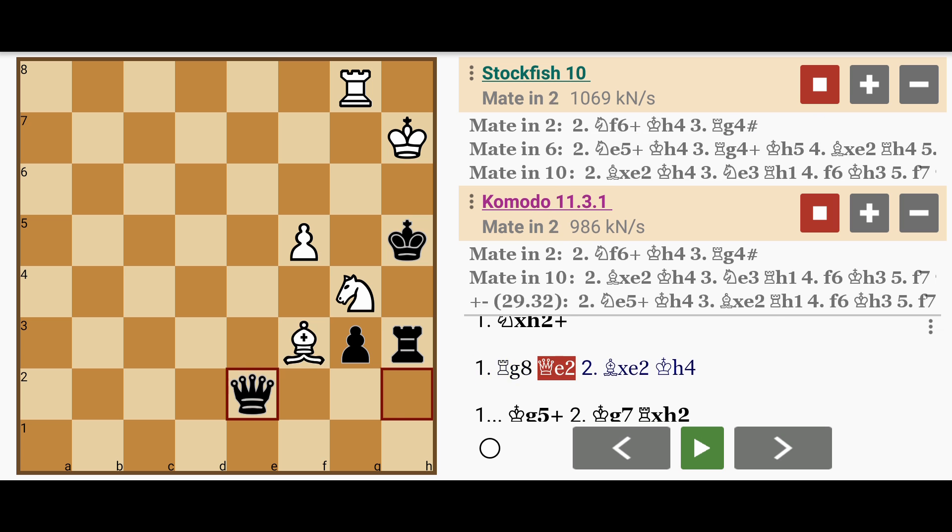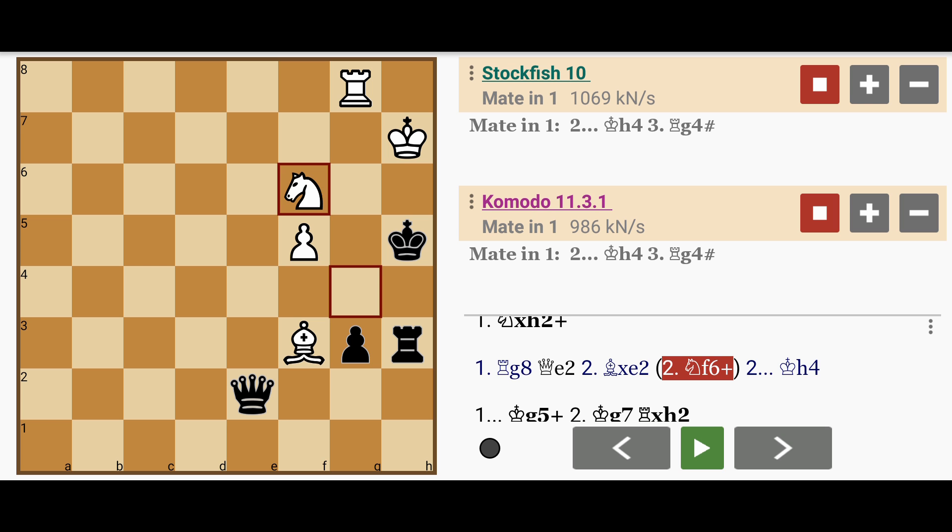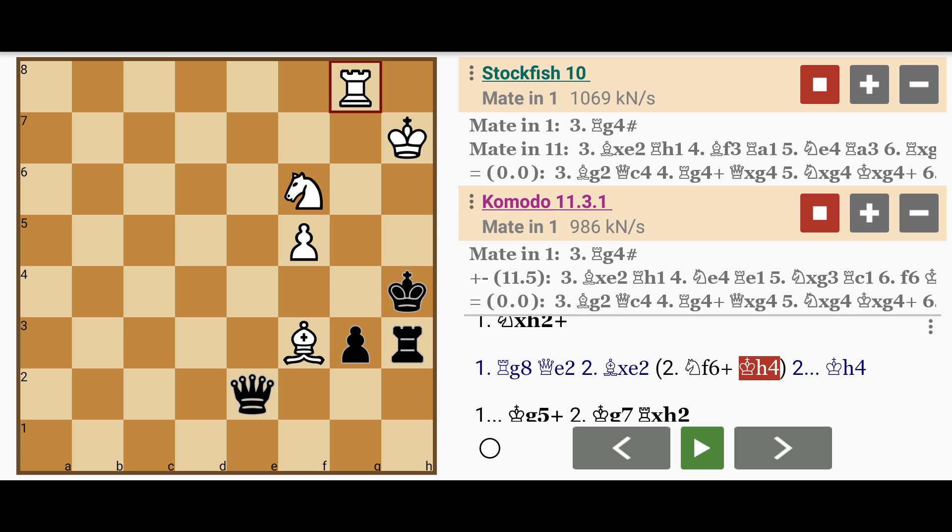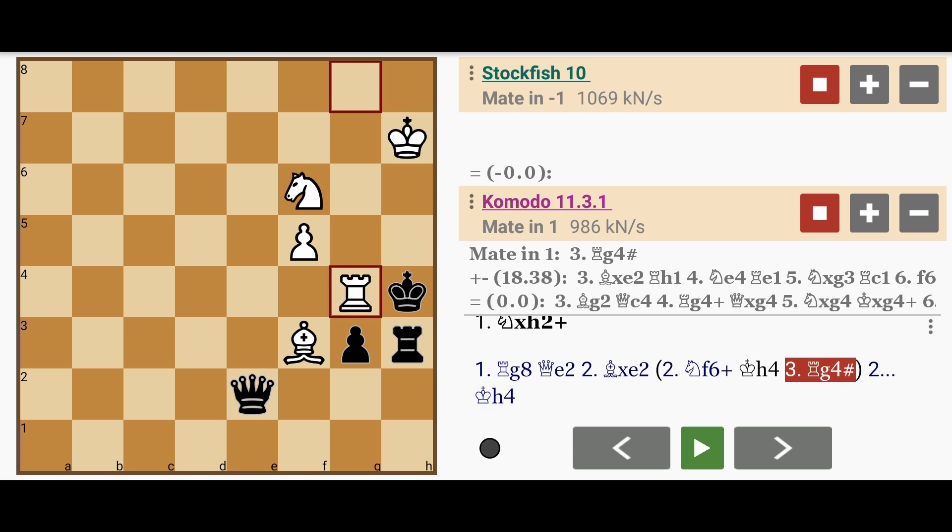So after queen to e2, white simply continues as planned: knight to f6, a double check. The king has no other square to move except to h4, and white wins with rook to g4, checkmate.